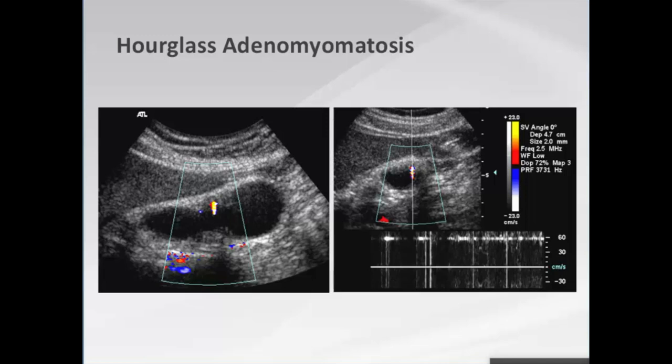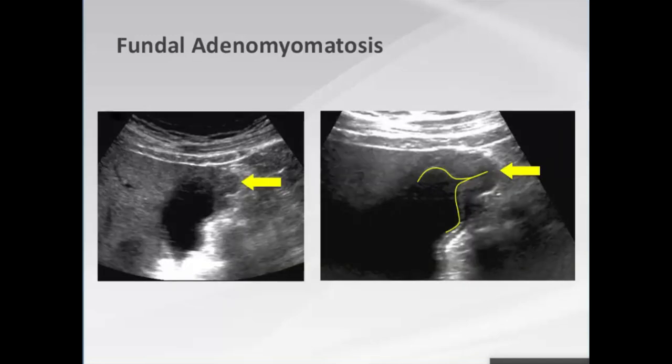Fundal adenomyoma shows thickening of the gallbladder fundus. With a higher frequency probe, an intact mucosa can be seen. This thickening is very typical of fundal adenomyoma and is not gallbladder cancer.